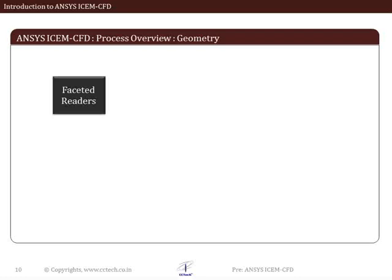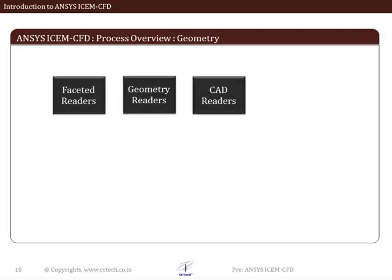If the model is available in a faceted or triangulated format, the data can be imported into ICM CFD using the faceted data reader. There are various geometry and CAD readers or translators which can import geometry present in neutral file formats like IGS or STEP. In most cases, translation operations cause data loss and require CAD repair before meshing. Along with these methods, it is always possible to use direct CAD interfaces to input the geometry into ICM CFD.